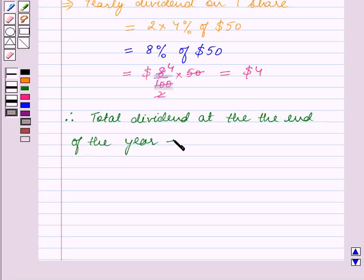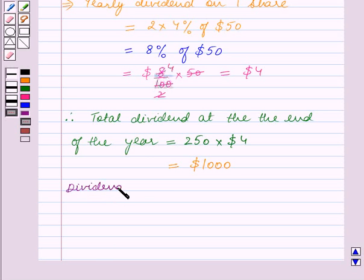is equal to the total number of shares, which is 250, times the yearly dividend on one share, which is $4. This is equal to $1000.